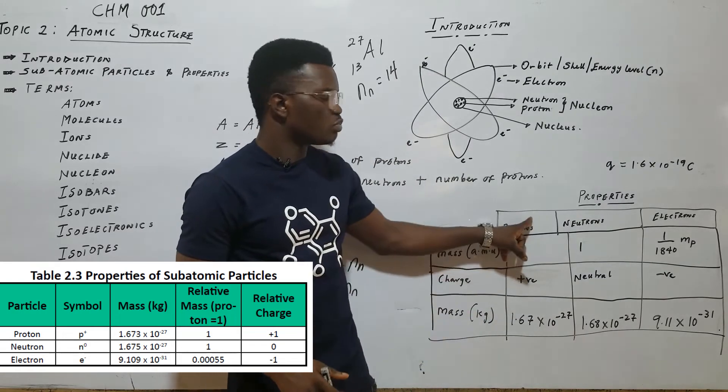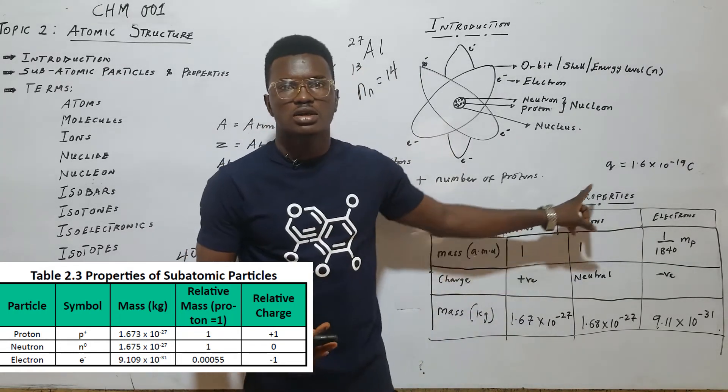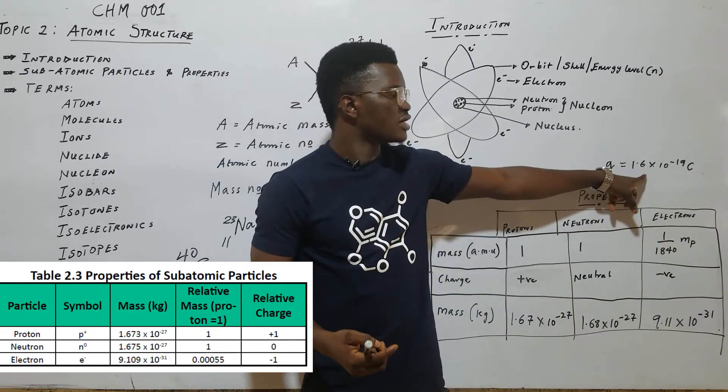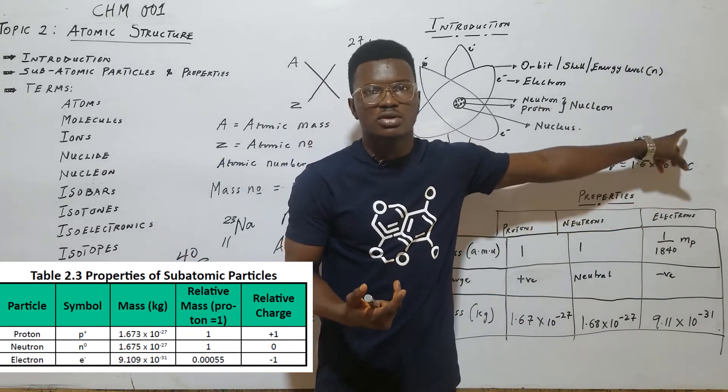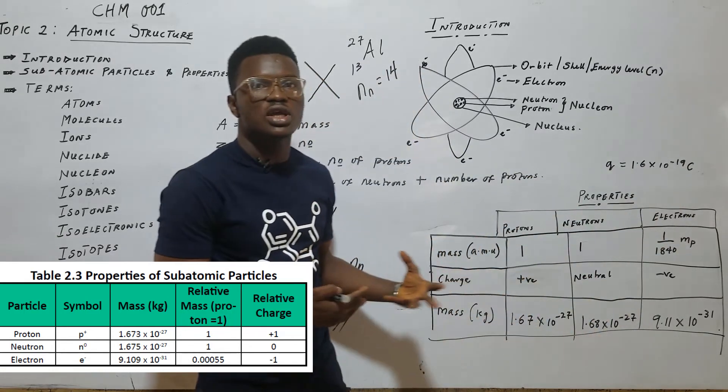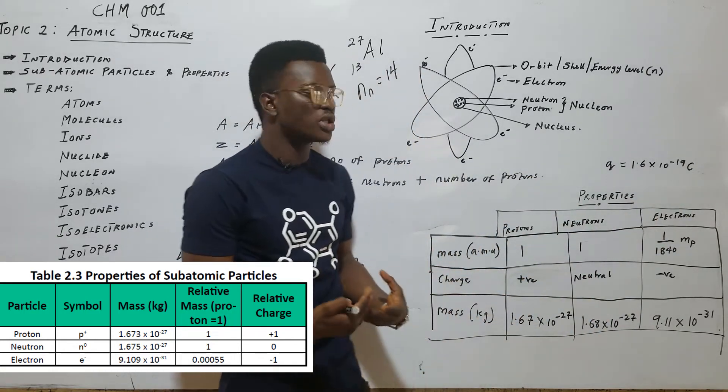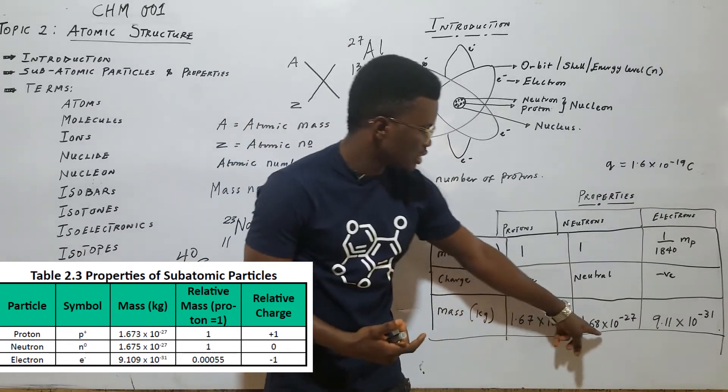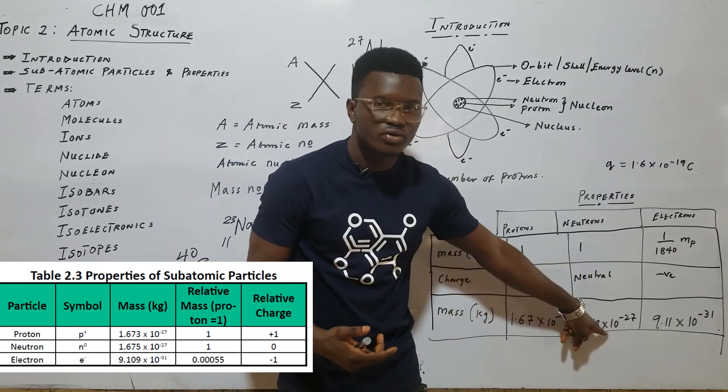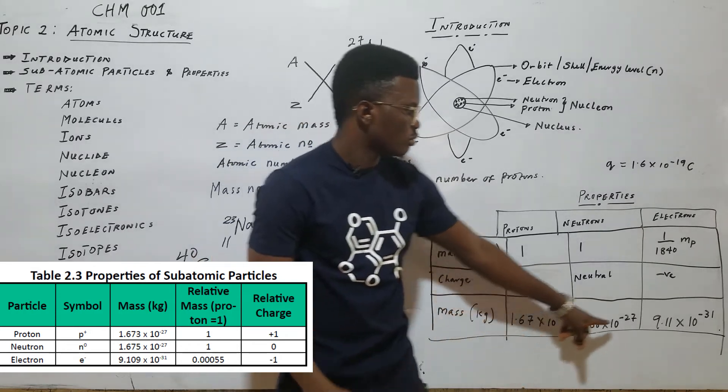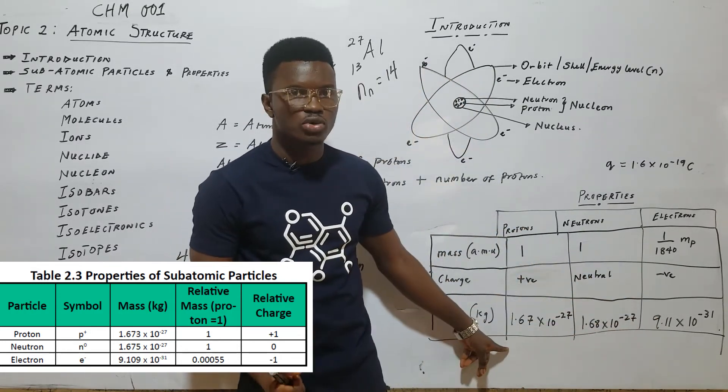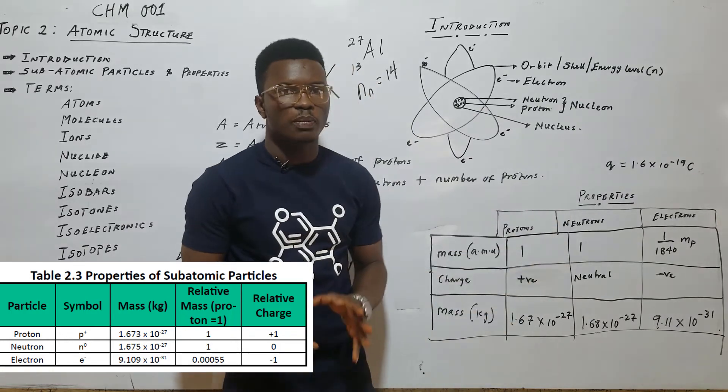The charge: protons is positively charged, neutron is neutral, while electron is negatively charged. The charge is 1.6 times 10^-19 Coulomb. We'll see how we come across the charge as we move on with the class. The mass is also measured in kilogram. You can see, the mass of proton and the mass of neutron, they are approximately equal. But the mass of electron is far less compared to the mass of proton. So, that is dealing with the properties of the atom.